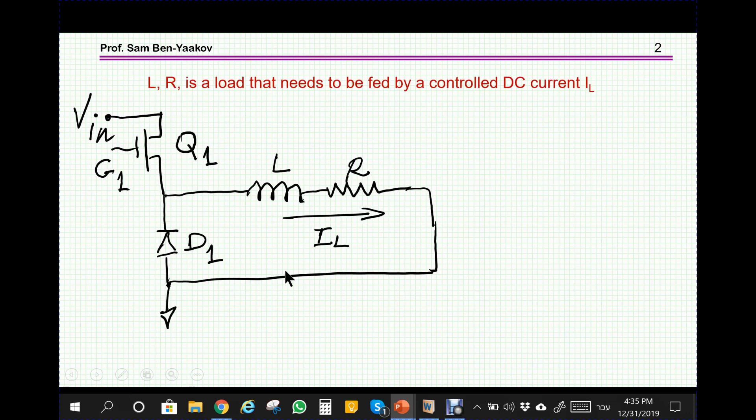Here is a description of a simple buck converter which feeds a load composed of L and R. This load requires a controlled DC current, and this value of the current could be changing.